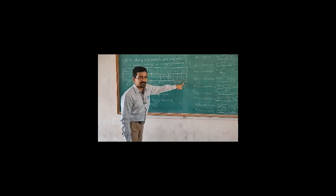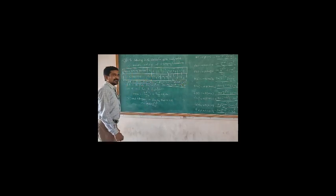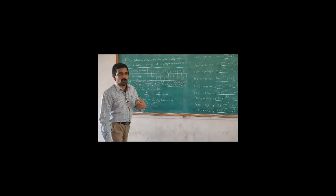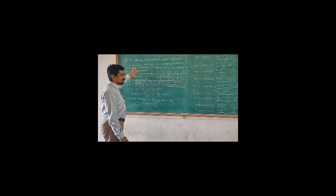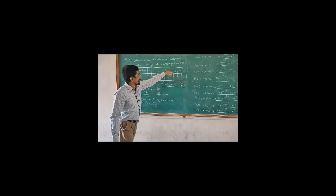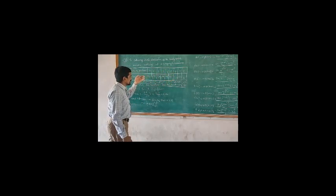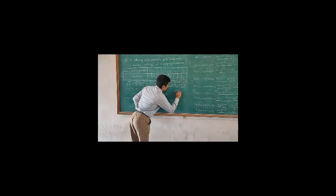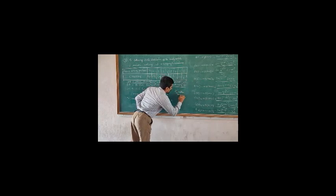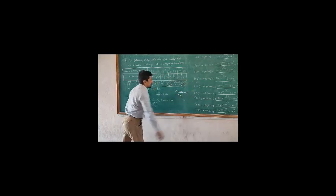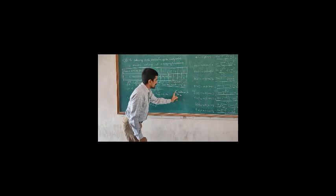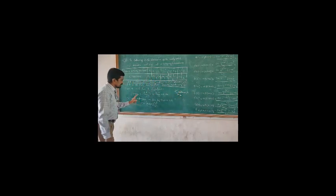First, calculate the lambda value. The formula for lambda is the mean. Lambda is the mean of the distribution. Since these are grouped frequency data, the mean formula is: lambda equals the sum of (f times x) divided by the sum of f.